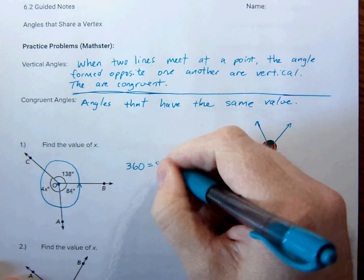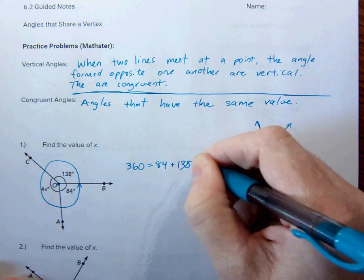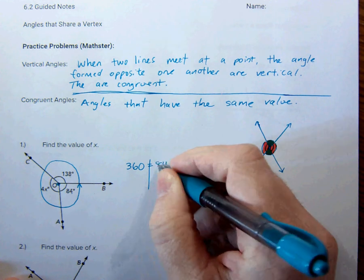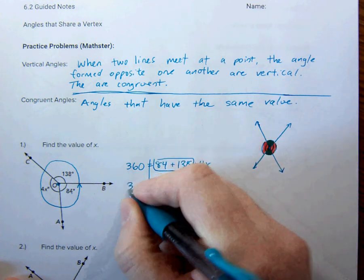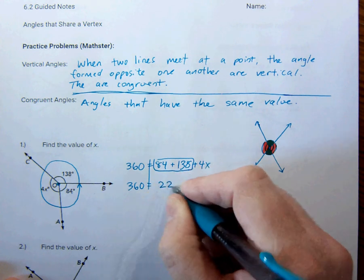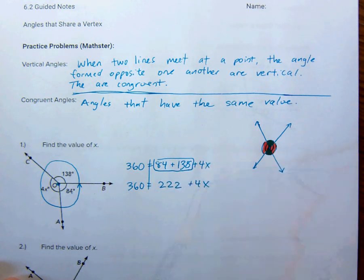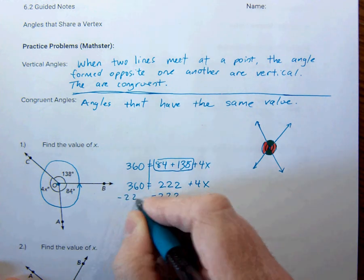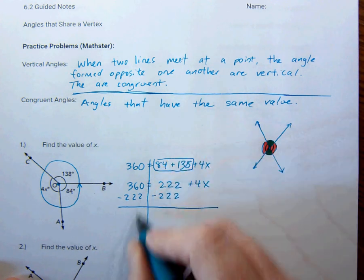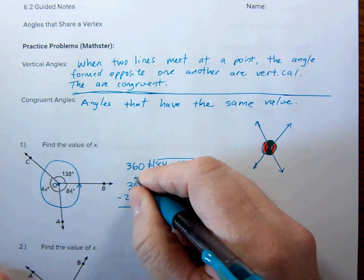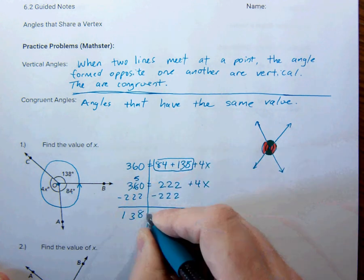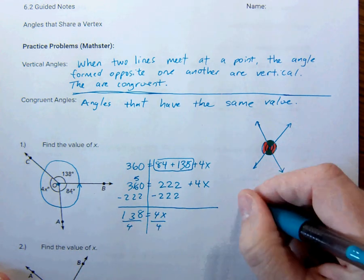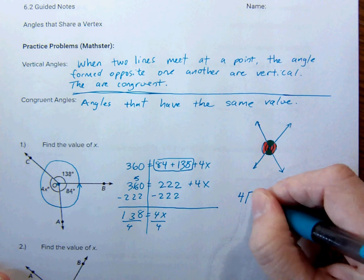360 is the same as 84 plus 138 plus 4x. So 84 plus 138 plus 4x. Let's solve for x here. I'm gonna add these two together here. I get 360 is equal to, I believe that is 222 plus 4x. Subtract 222 from both sides.